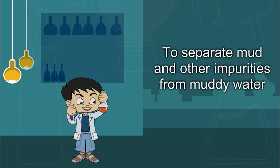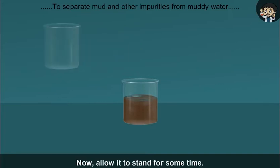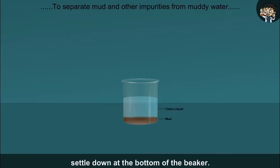To separate mud and other impurities from muddy water. Take some muddy water from the pond or river and pour it in a beaker. Now allow it to stand for some time. You will see that some mud and other impurities settle down at the bottom of the beaker.